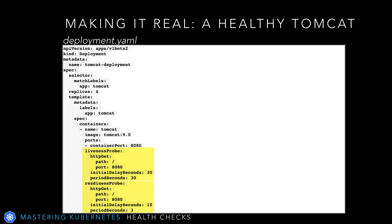In this case, we'll tell it to access port 8080 every three seconds after an initial delay of 15 seconds, on simply the slash directory. Once this succeeds, Kubernetes will know that the pod is ready for business. After that, it'll go to the liveness probe. Every 30 seconds, after an initial delay of 30 seconds, it will use HTTP to access port 8080 on the slash path. If the HTTP request fails, it will deem the pod to be unhealthy.